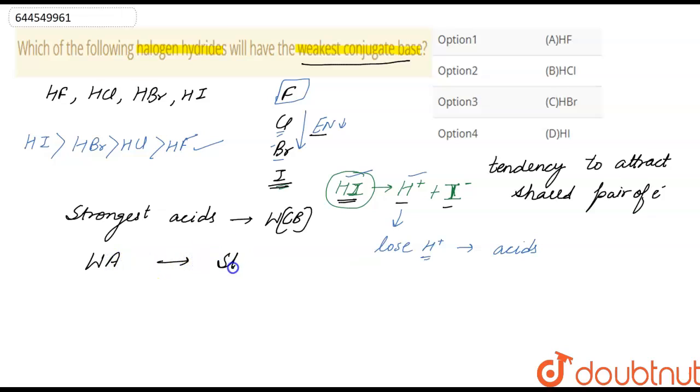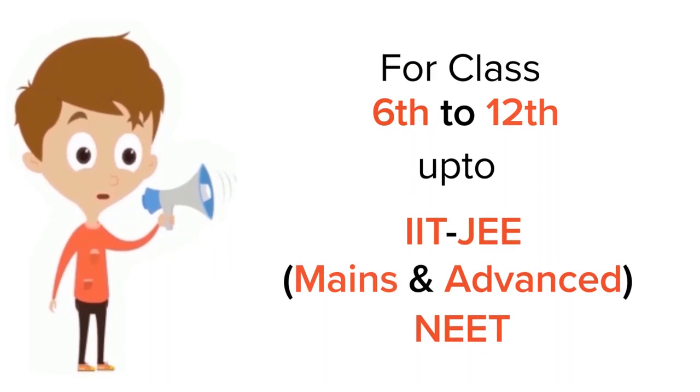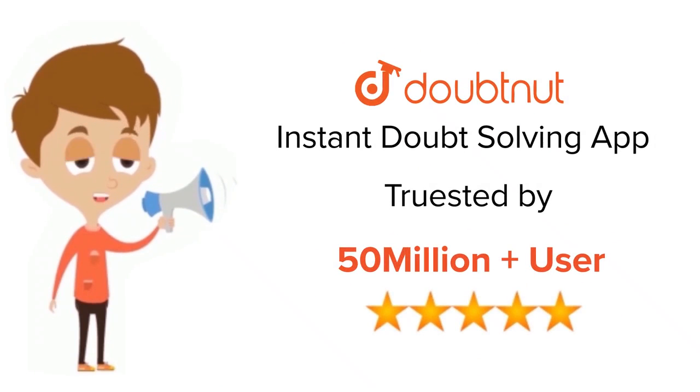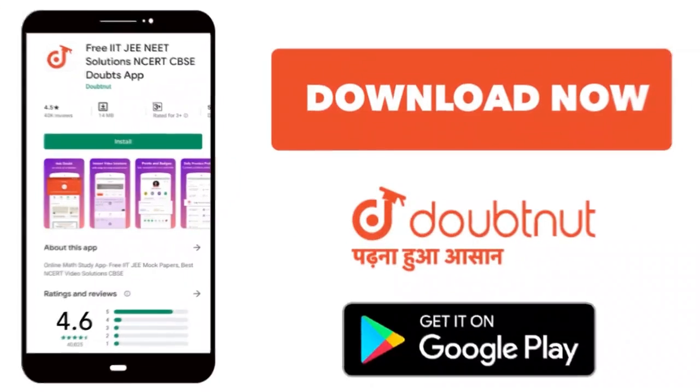So here, strongest acid is HI, then that means HI will have the weakest conjugate base. So correct option is option four. For class 6 to 12th, IIT-JEE and NEET level, trusted by more than 5 crore students. Download Doubtnut app today.